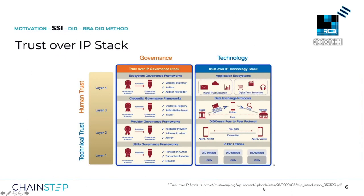The Trust Over IP Stack is a four-layered dual stack which separates human trust from technical trust. Human trust is about trust that cannot be achieved by technology — it is about governance topics and questions like: how can I be sure that this implementation is doing what it is supposed to do? Or, how can I be sure that this provider is trustworthy? In general, it is about certificates and seals from trustworthy entities. Let's focus on the technical part.